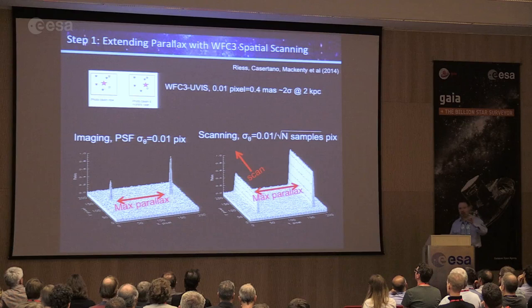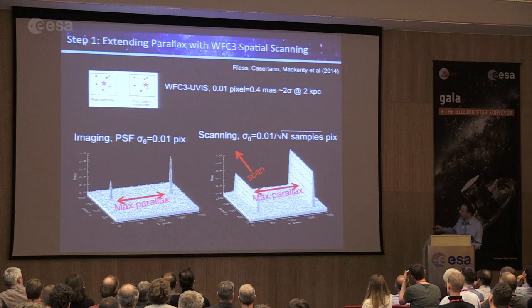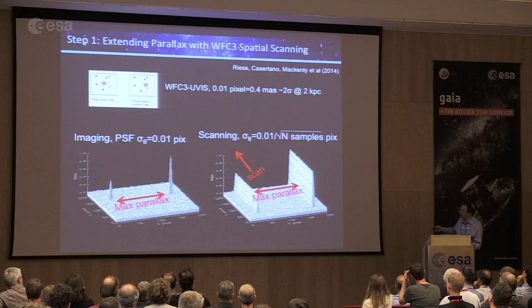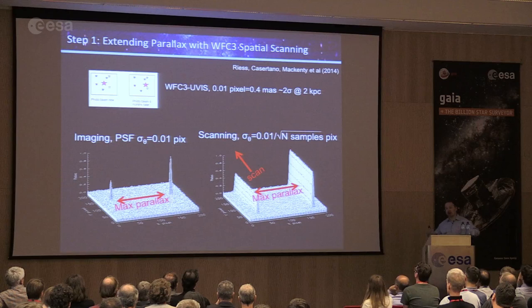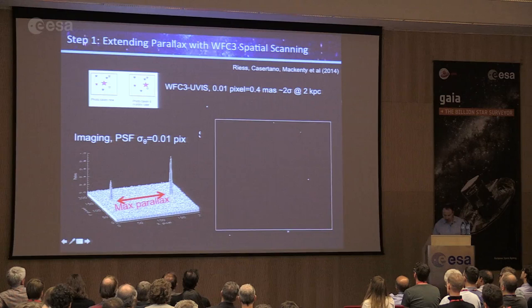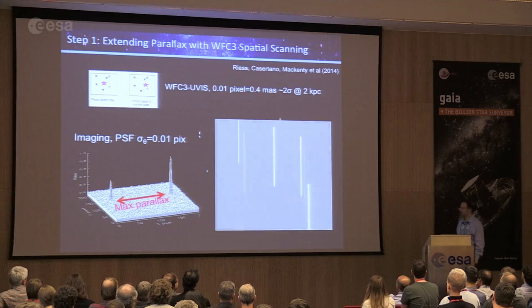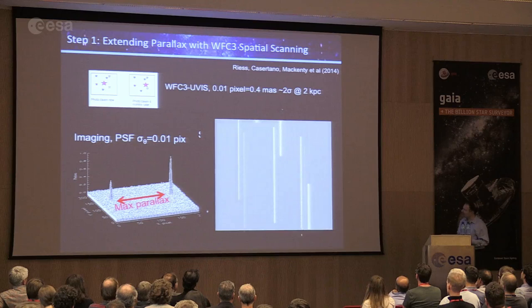Stefano Casertano and I had the idea to use Hubble to do something like what Gaia was going to do for the whole sky, but at just a few specific pointings. Engineers had changed the way Hubble observes bright stars without saturating — used for exoplanet transits. We thought: what if we scan the telescope during observations perpendicular to the longest axis for parallax? Instead of measuring to one one-hundredth of a pixel, we collect thousands of samples, reducing uncertainty dramatically. In 2011 we demonstrated this with director's discretionary time.